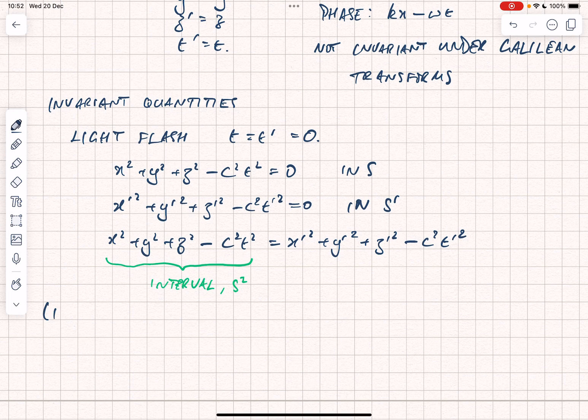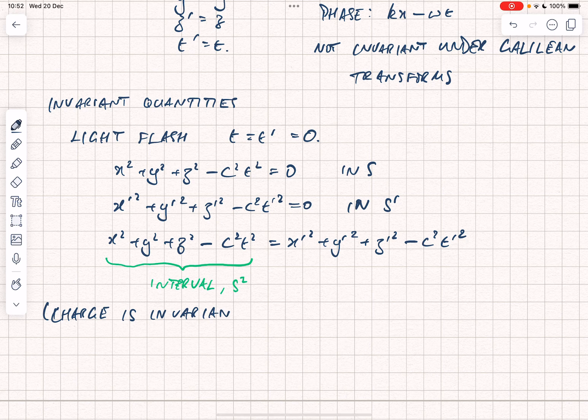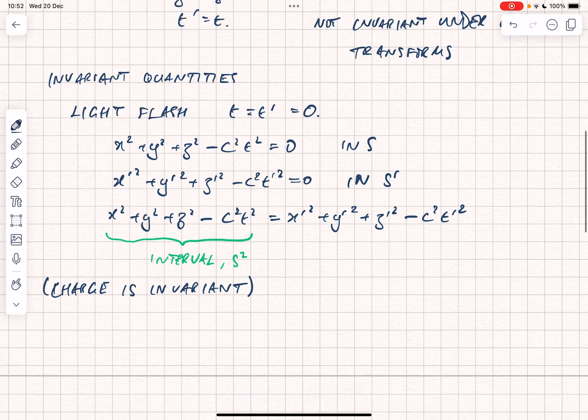We will see in another video that charge, total charge, is invariant. And you can show that quite easily from all of these ideas. And from this idea that the interval must be invariant when we transform between reference trains, we can derive the Lorentz transforms, which are different to the Galilean transforms.